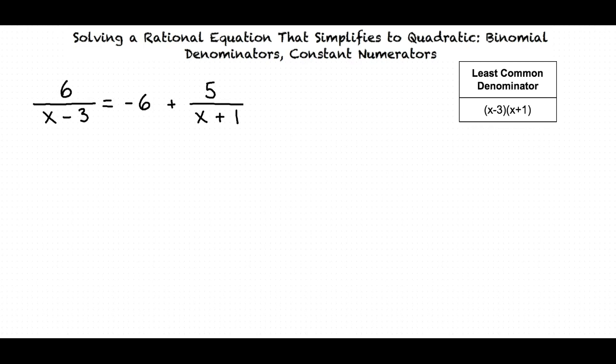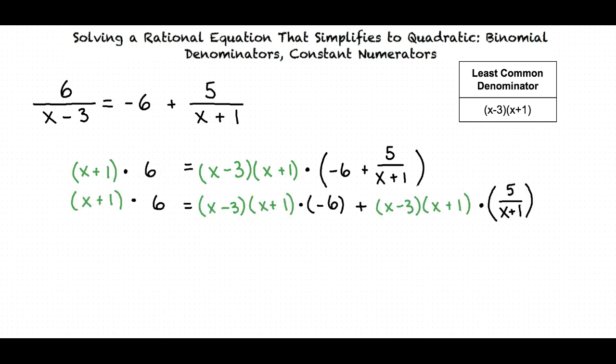Now that we know what our least common denominator is, we multiply both sides of the equation by this value. We do this to cancel the denominators of each of our fractions. The x minus 3 cancels on the left-hand side of our equation. We can do this because x minus 3 divided by x minus 3 is equal to 1, and anything times 1 has no change in value. We use the distributive property on the right-hand side of our equation. Here we can cancel the x plus 1's.